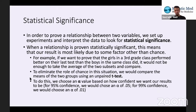To do this, we choose an alpha value based on how confident we want our results to be. For 95% confidence, we would choose an alpha of 0.05, because confidence is one minus alpha, and alpha is one minus confidence.